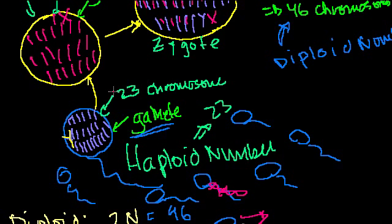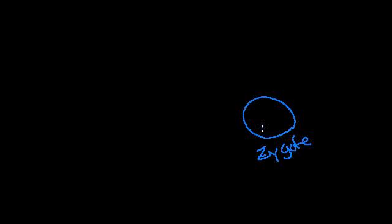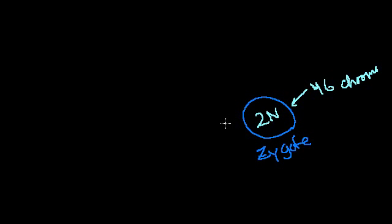Now with that vocabulary in place, let's talk about how zygotes turn into people, and how people produce gametes to form more zygotes. That very first cell — my mother's egg fertilized by my father's sperm — was a zygote. As soon as it's successfully fertilized, it has 2n, or the diploid number of chromosomes — 46 in humans. This cell begins to split and divide over and over again by a mechanism called mitosis, which is literally just a cell splitting to form copies of itself.